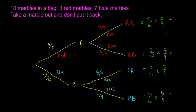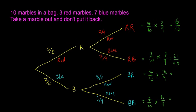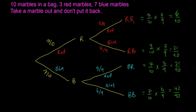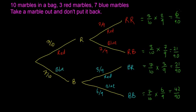Putting those into the calculator: red-red gives six over ninety, red-blue gives twenty-one over ninety, blue-red gives twenty-one over ninety, and blue-blue gives forty-two over ninety. They're a bit more awkward than the coin example where they all came out to one quarter. To check, add them all together and the answer should be one — if it isn't, you know you've made a mistake.